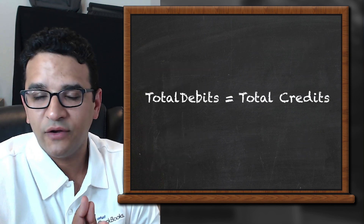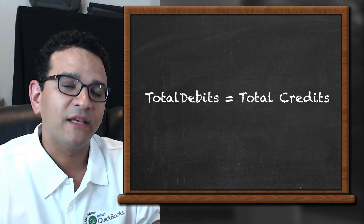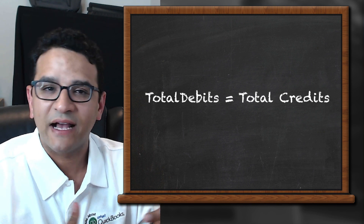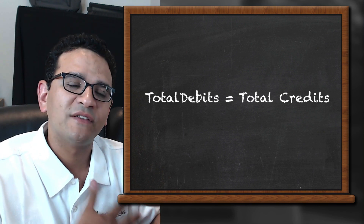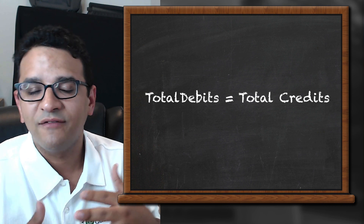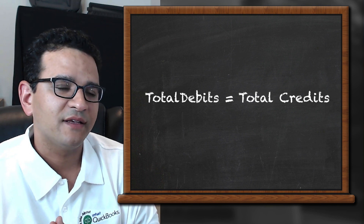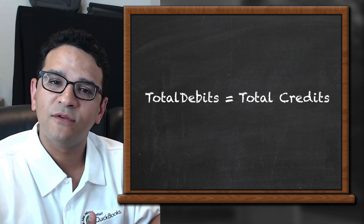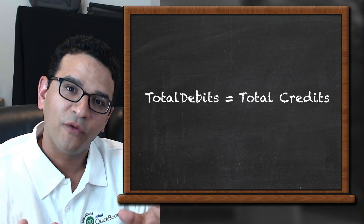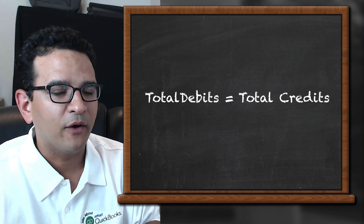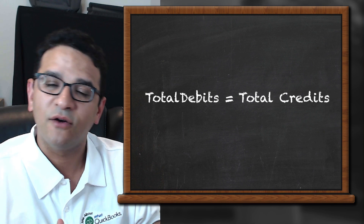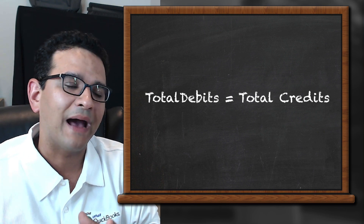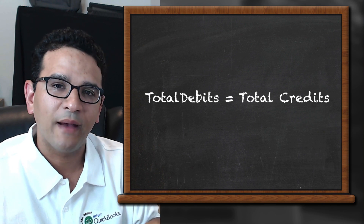Fundamentally, all journal entries or accounting transactions must be balanced — total debits will always equal total credits. You can have multiple debit accounts and a single credit account, multiple credit accounts and a single debit account, or a combination, as long as both sides balance to the same dollar amount.